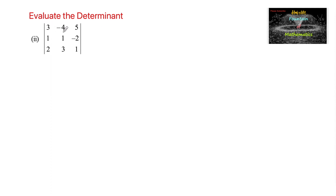Evaluate the determinant of the 3×3 matrix: 3, -4, 5; 1, 1, -2; 2, 3, 1. Since there are no zeros in any row or column, we can find the determinant by expanding along any row or column. Let us use the first row.